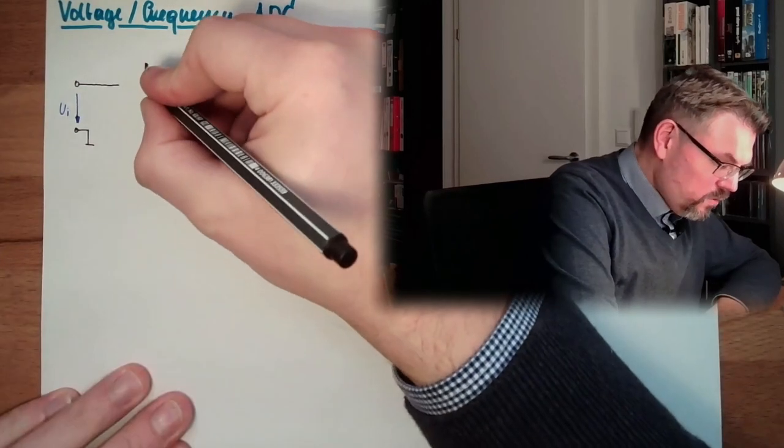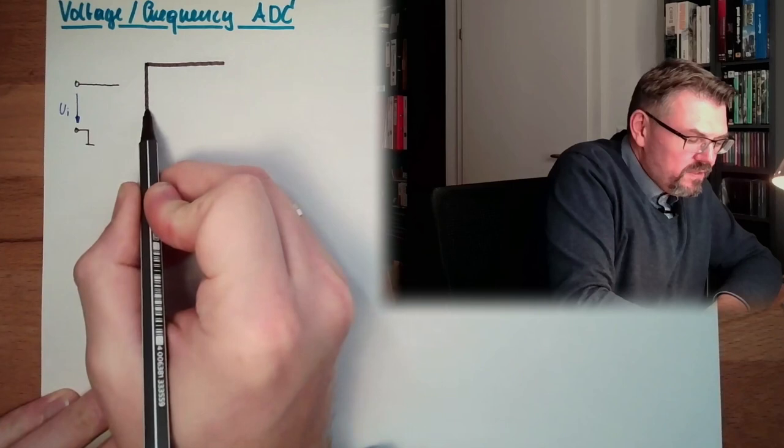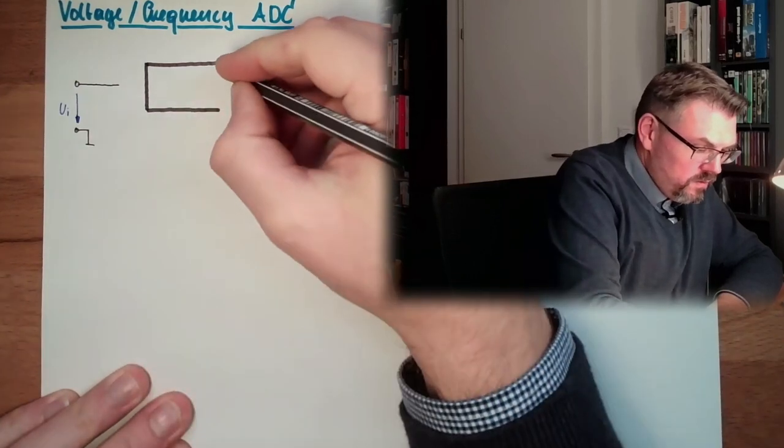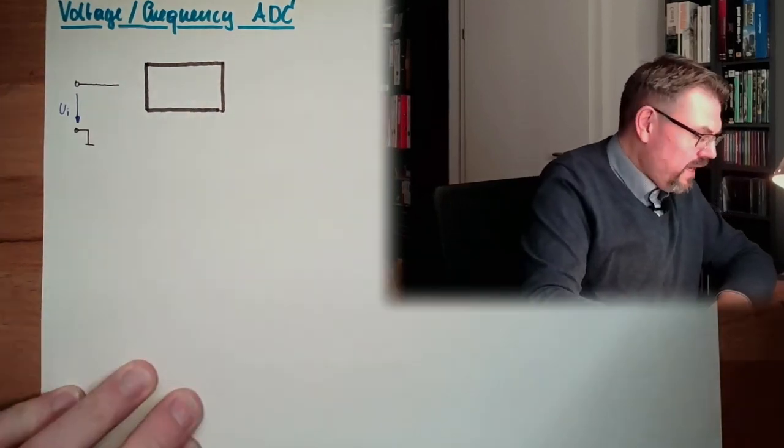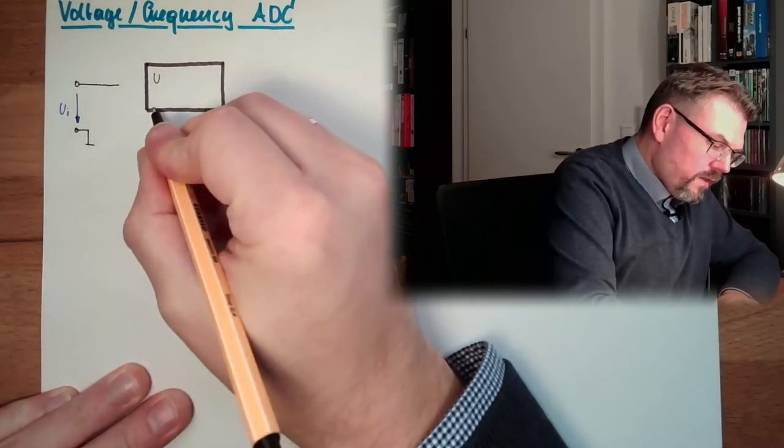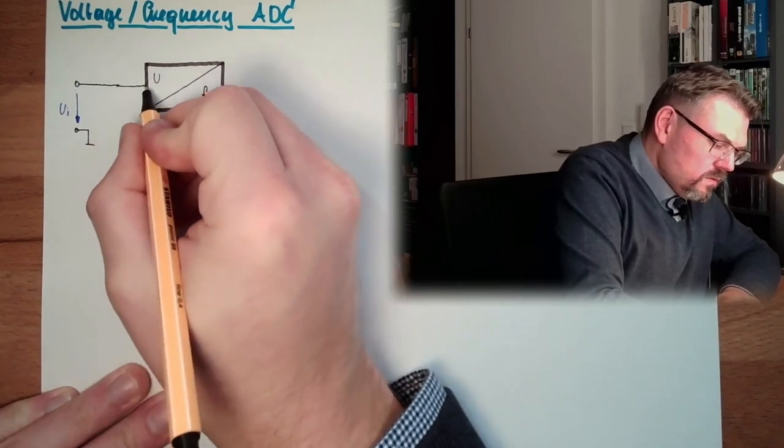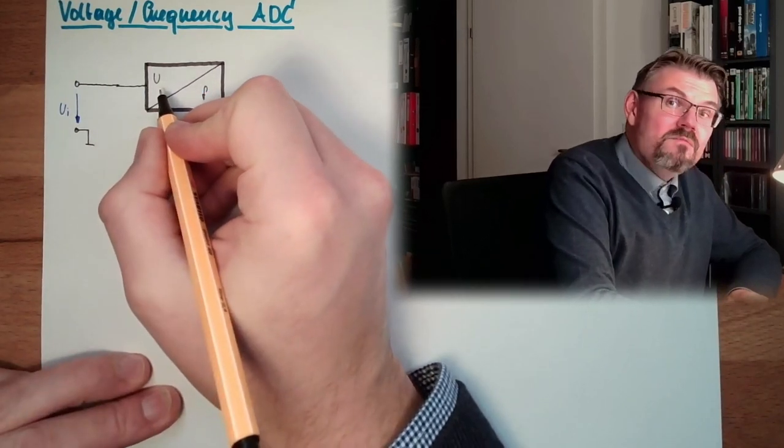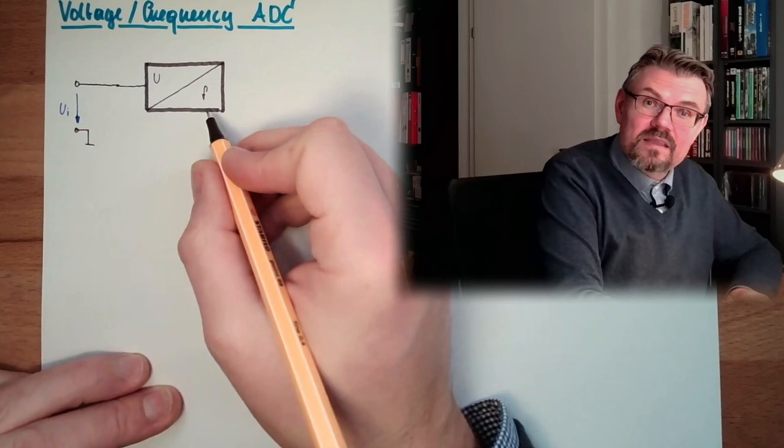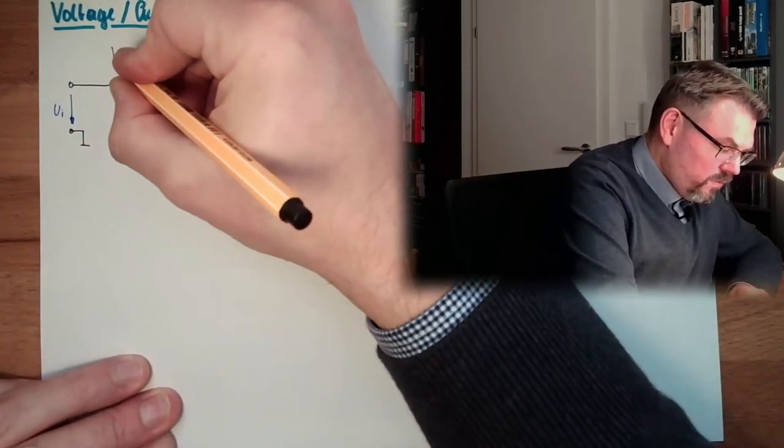I'm drawing this block I just talked about - a voltage frequency converter. On one side we have a voltage input U, on the other side we have a frequency output. The higher the input is, the higher the frequency at the output. This is a voltage frequency converter.